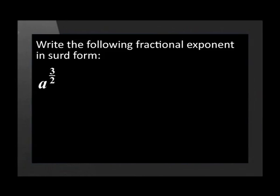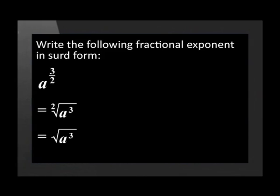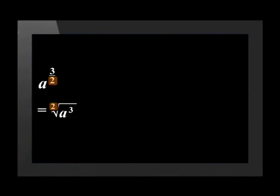Now that we've seen Dumsani do it, let's apply what we've learned to this question: write the fractional exponent in surd form. A to the power of 3 over 2 — this is straight application of the law. A to the power of 3 over 2 in surd form is the square root of A cubed. Remember, we don't normally show the 2 when writing the square root. The denominator of the exponent becomes the number in the tail of the root, and the numerator goes inside the root sign with the base A.